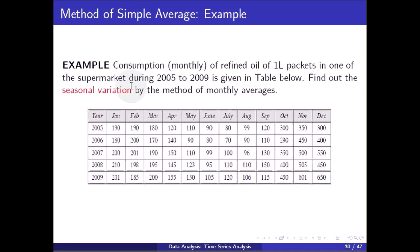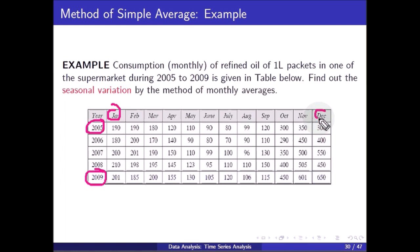Now we look at an example. Consumption of refined oil in 1-liter packets in a supermarket during 2005 to 2009 is given in the table. Find the seasonal variation by the method of monthly averages. In January 2005 total consumption is 190, and in January 2009 it is 201. In December 2005 consumption is 300 and in December 2009 it is 650 liters.